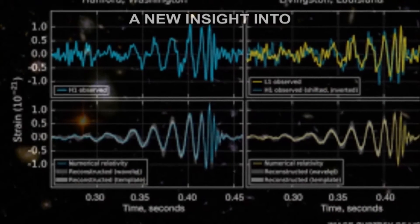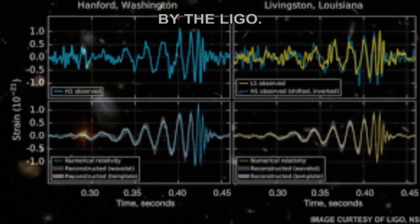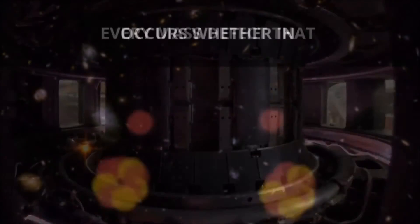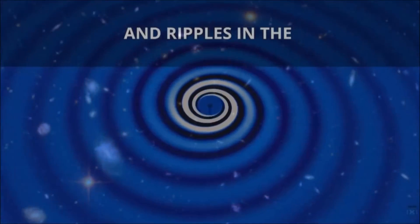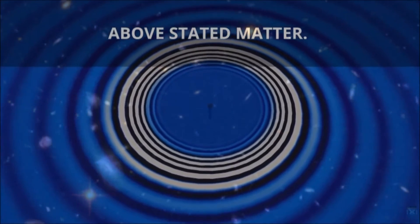This matter provides a new insight into the detected ripples by the LIGO. Every mass defect that occurs, whether in nuclear reactions or other events, generates pressure waves and ripples in the above stated matter.